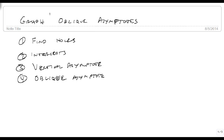We're now going to graph rational functions that contain oblique asymptotes. The basic pattern is the same. We still find our holes after factoring.